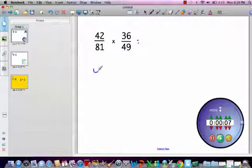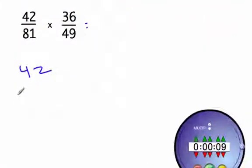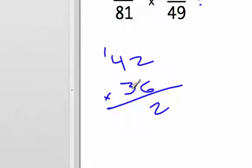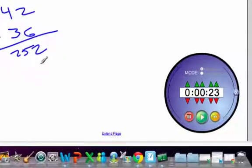So we get 42 times 36. That's not something I can necessarily do in my head. 2 times 6 is 12, carry the 1, 24, 25. Write a 0 for a placeholder. 3 times 2 is 6. 3 times 4 is 12.